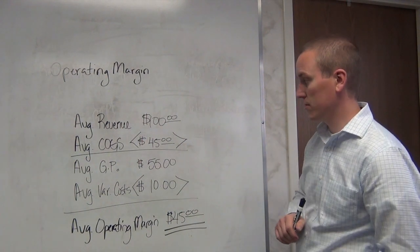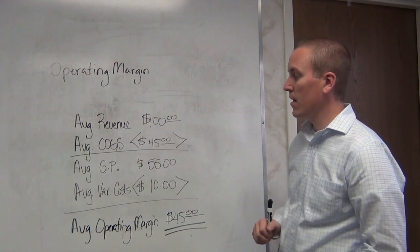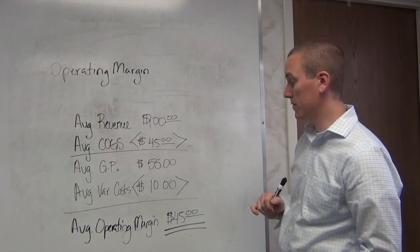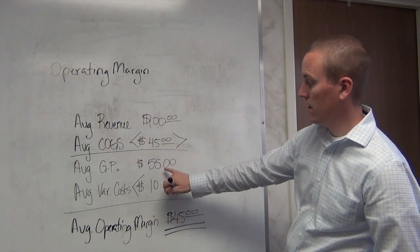An average cost of goods sold of $45. If you take the $45 from your $100, that leaves you with a gross profit of $55.